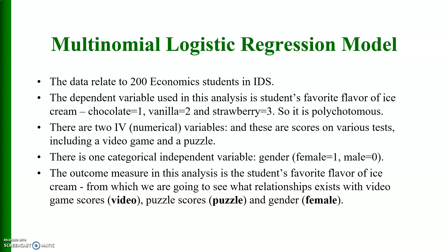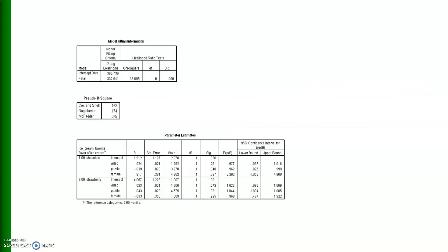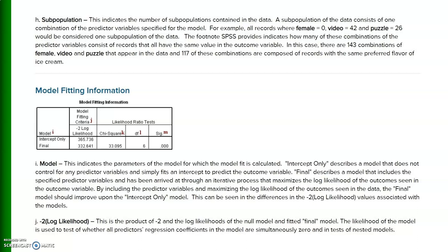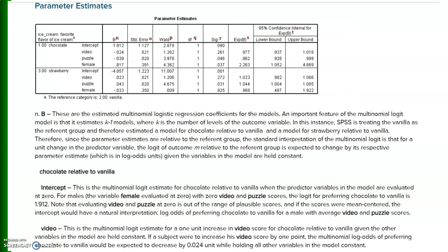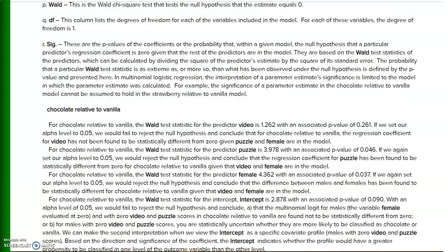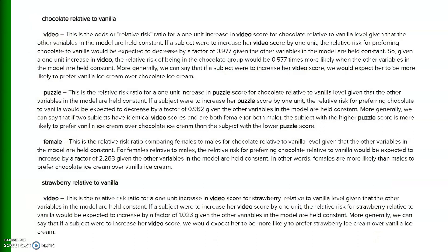The dependent variable has three categories representing students' favorite flavor of ice cream: chocolate, vanilla, and strawberry — so it is polytomous. This was done in SPSS. The results show the number of observations, marginal percentages, model fitting information including chi-square, degrees of freedom, significance, and pseudo R-square. The outputs show chocolate relative to vanilla, and strawberry relative to vanilla, along with the exponentiated beta coefficients.